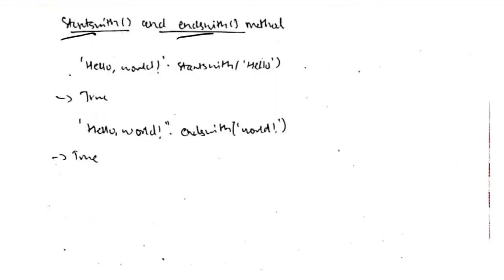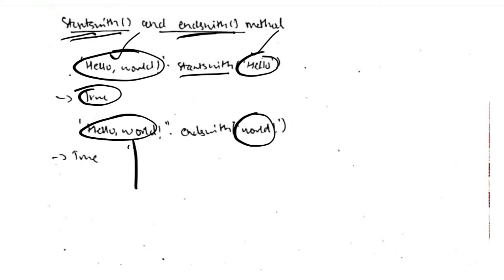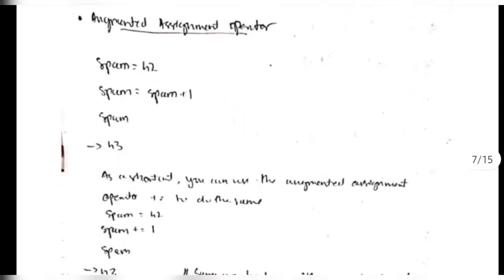Finally, we have startswith() and endswith(). To check if a string starts with a particular substring, use startswith() — for example, 'hello world'.startswith('hello') returns True. Similarly, 'hello world'.endswith('world') returns True because it ends with 'world'. So this is all we need to know from Module 2.